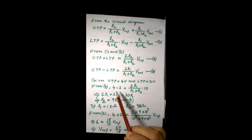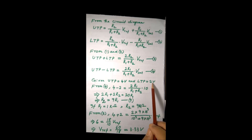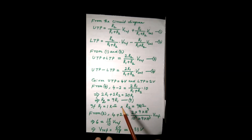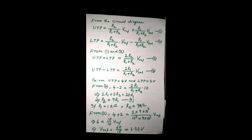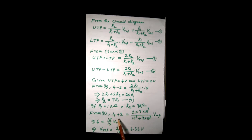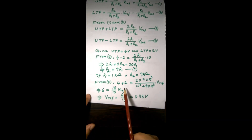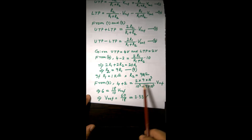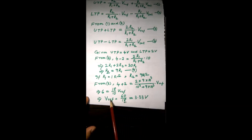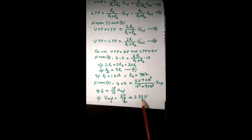UTP is +4 volt and LTP is +2 volt. Substituting into equation 4, we get a relationship between R2 and R1. We can choose R1 as 1 kilo ohm, which gives R2 as 9 kilo ohm. After obtaining R1 and R2, we substitute their values along with UTP and LTP into equation 3 to find V reference, which comes out to be 3.3 volt.